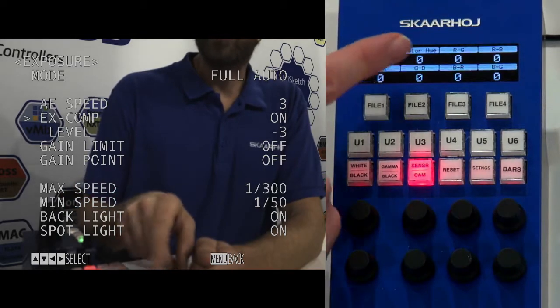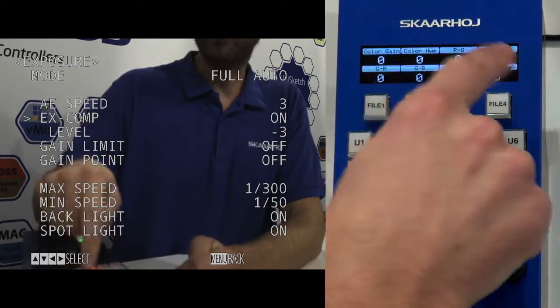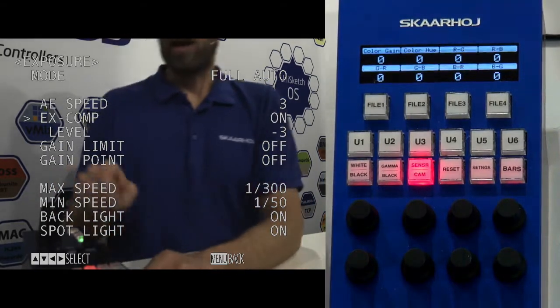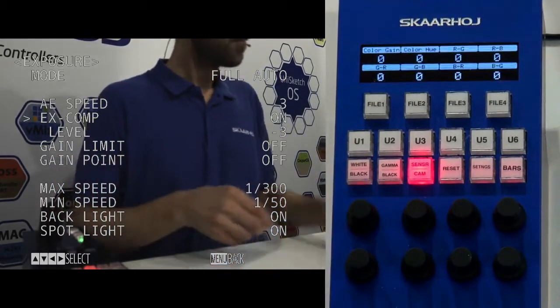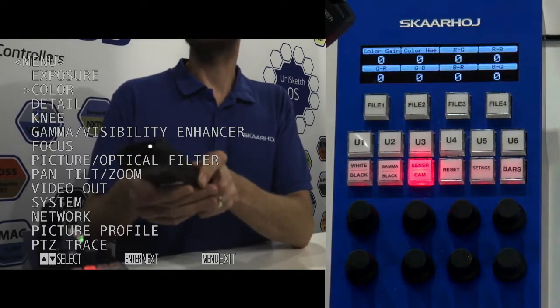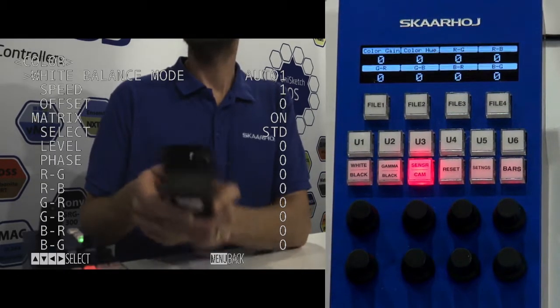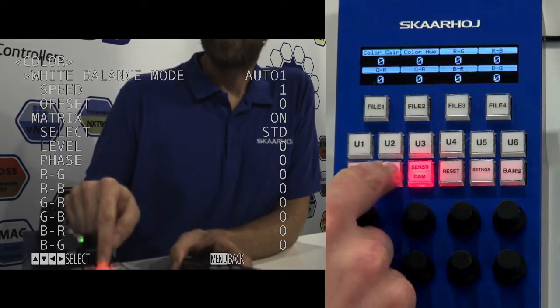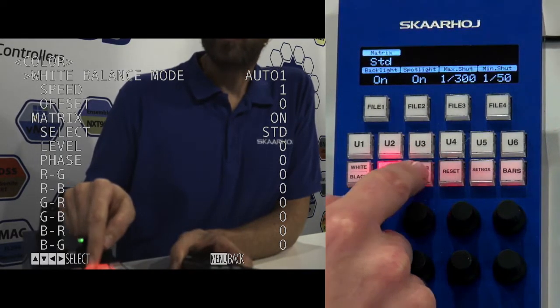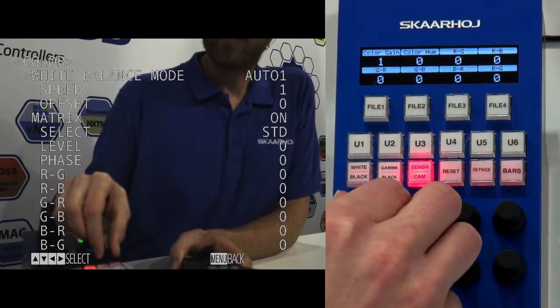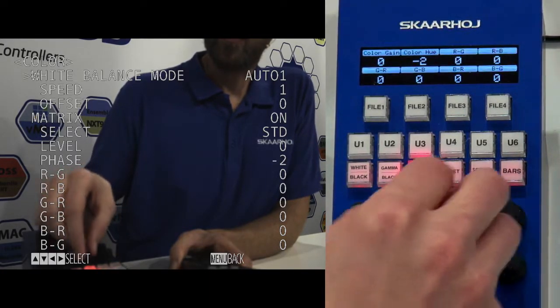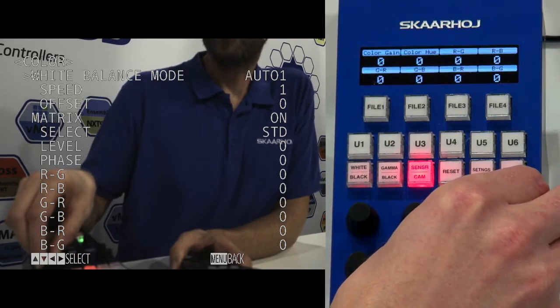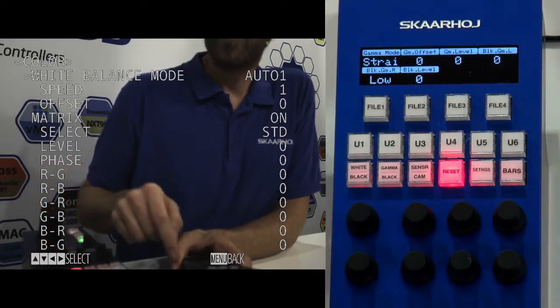If I go here, you can now select color gain, color hue, RG, RB, all these dimensions are easily adjusted right now. To see how that is reflected on the screen, we should go to the color menu. So on this screen, you can see all these modes are set up. We have color gain, color hue, and so forth, all these values. You're probably going to trust me now.